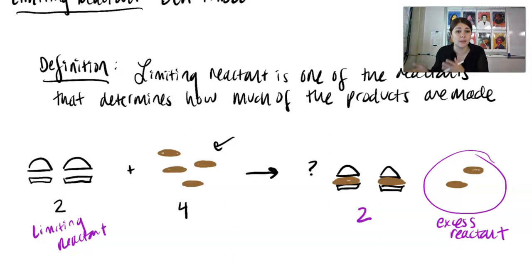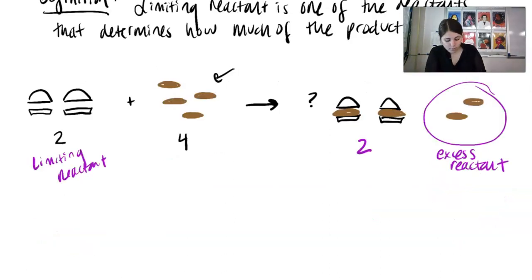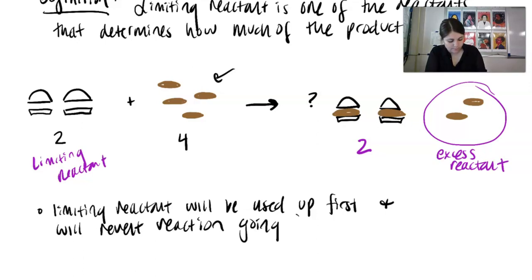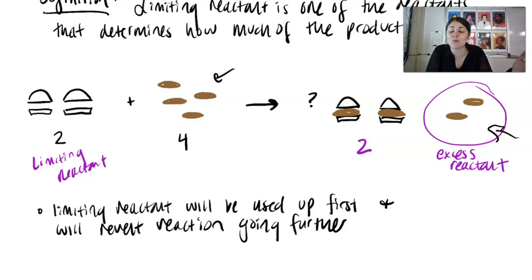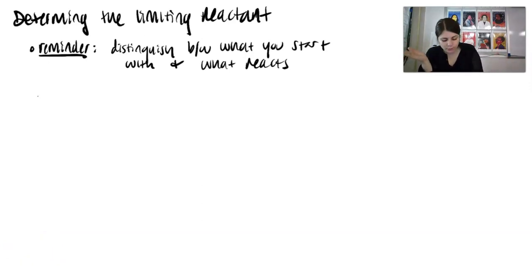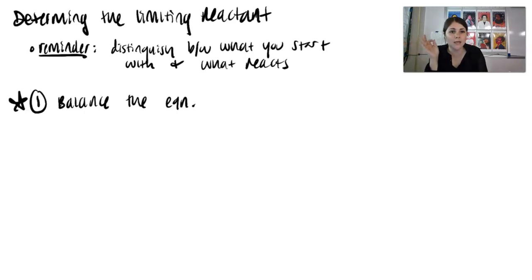The limiting reactant limits how much product we're going to make. The overall message is that the limiting reactant will be used up first and will prevent the reaction from going further — we were not able to make more complete hamburgers. To determine the limiting reactant, you need to distinguish between what you start with and what actually reacts. No matter what, when it comes to stoichiometry, your first and most important step is to balance the equation. Even if you see coefficients, you cannot assume it's balanced — you need to verify it.